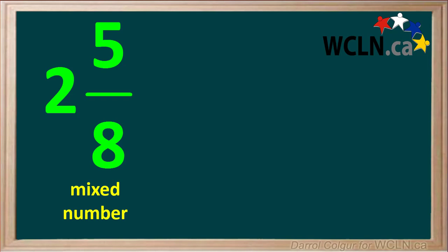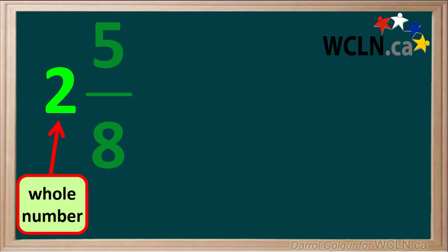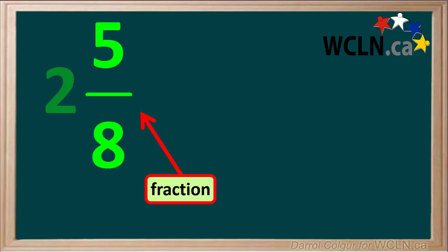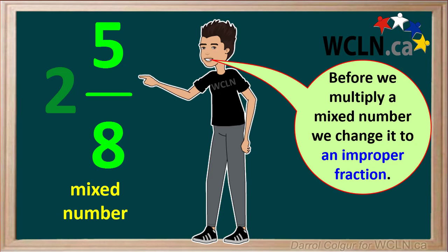Here's a mixed number. A mixed number consists of two parts: a whole number and a fraction. Before we multiply a mixed number with something, we first need to change it to an improper fraction.